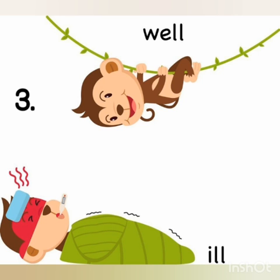Number three is well and the opposite of well is ill. You can see in the picture — one monkey is hanging and is hale and hearty, seems to be very happy. But the other one is lying on the bed and seems to be ill, meaning sick — he is not well. So the opposite of well is ill.